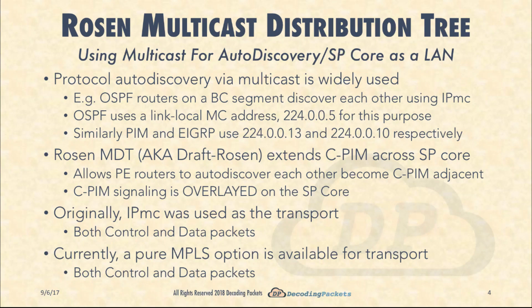That brings us to the very first model available as an option for mVPNs: the Rosen model, or Rosen Multicast Distribution Tree, also simply called MDT. The name Rosen comes from the famous network engineer Eric Rosen, responsible for a plethora of RFCs for the IETF — most notably the basic MPLS RFC and the MPLS Layer 3 VPN RFC. This started as a document called Draft Rosen and was later turned into historic RFC 6037.